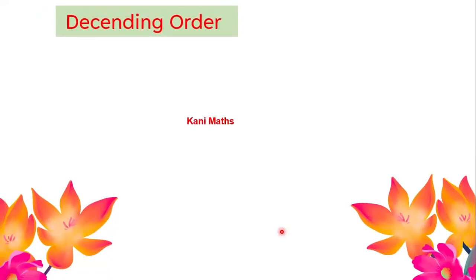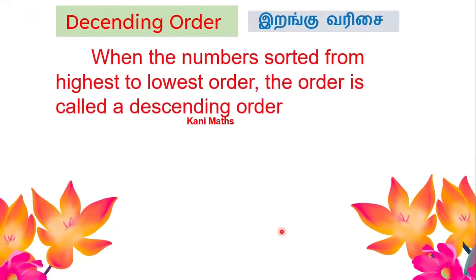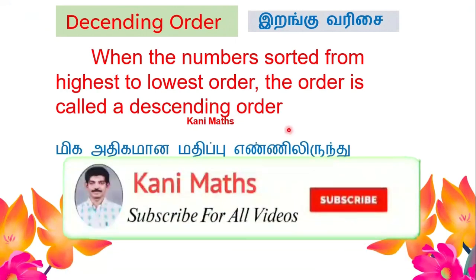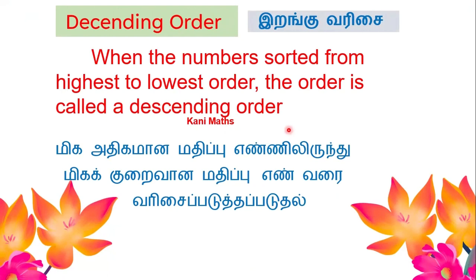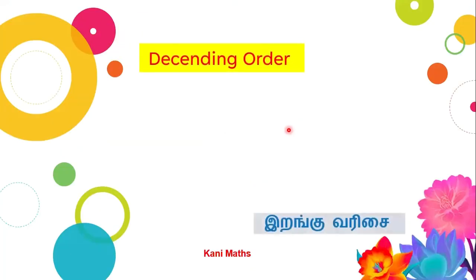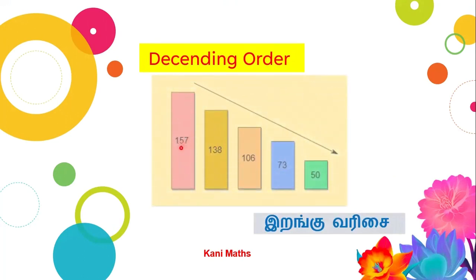Next is descending order. When the numbers go from highest to lowest order, that is called descending order. For example: the big number is 157, then 138, then 106, then 73, and the small number is 50. The numbers are decreasing — that is descending order.